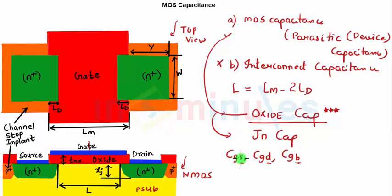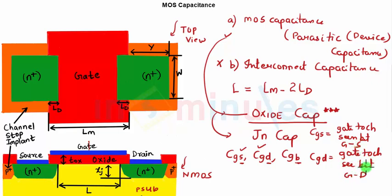CGS is the gate to channel capacitance seen between the gate and the source terminal. CGD is gate to drain. This is also gate to channel capacitance seen between gate and source terminal. This is seen between gate and drain terminal. It's basically a gate to channel capacitance seen between gate to source and gate to drain. So here we are all set to start.